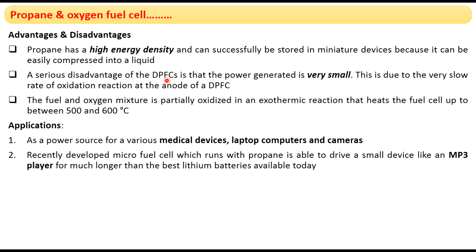A major disadvantage of the DPFC is that the power produced is generally very small, because the oxidation reactions occurring at the anode are very slow. In the micro propane fuel cell, the fuel-oxygen mixture is partially oxidized in an exothermic reaction, creating a high temperature of 500 to 600 degrees Celsius, which is another disadvantage.